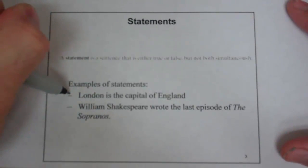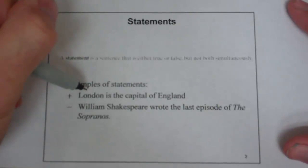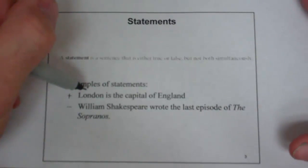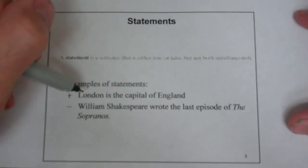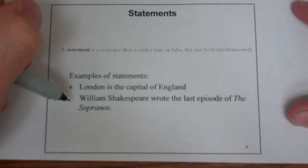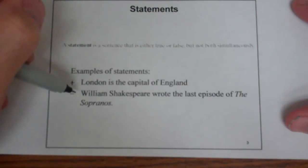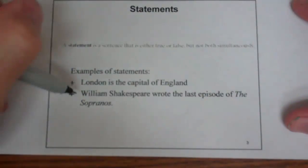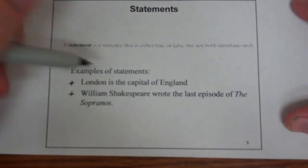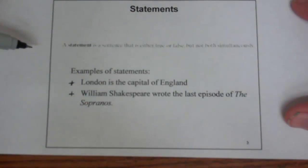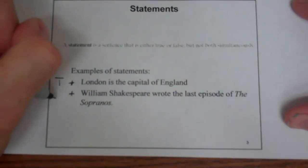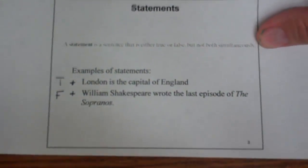Examples of statements: 'London is the capital of England' — that is either true or false. It's not an opinion, not a command, and it's not ambiguous. Statements have to be well defined so that they are either true or false. 'William Shakespeare wrote the last episode of The Sopranos' is obviously false, but it is either only true or false — a true statement and a false statement respectively.